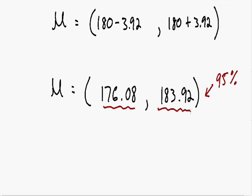This is the basic idea of confidence intervals: we take a smaller sample and make a very good estimation about the entire population. The answer to our confidence interval is 176.08 to 183.92.